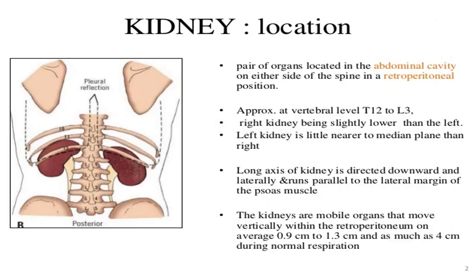Anatomical location of the kidney in the human body: the kidney is a reddish-brown organ present as a pair in the abdominal cavity, on either side of the spine, in a retroperitoneal position as seen in the diagram. The kidney is approximately present at the level of T12 to L3 lumbar vertebrae. The right kidney is slightly lower than the left kidney because of the presence of the liver on the right side. The left kidney is slightly narrower to the midline than the right.